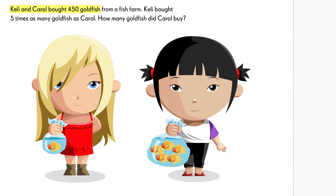Kelly and Carol bought 450 goldfish from a fish farm. Kelly bought five times as many goldfish as Carol. How many goldfish did Carol buy?